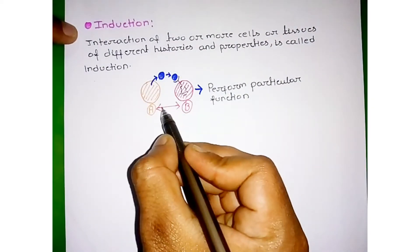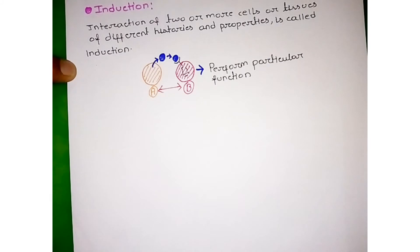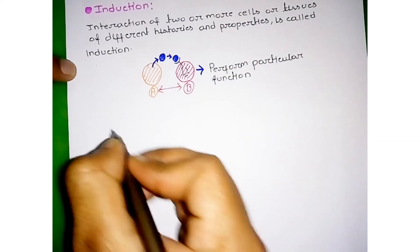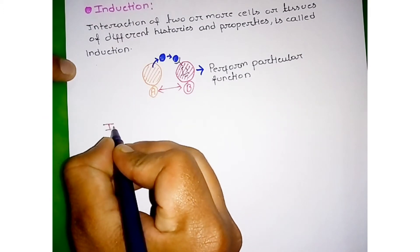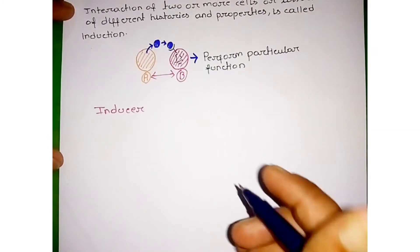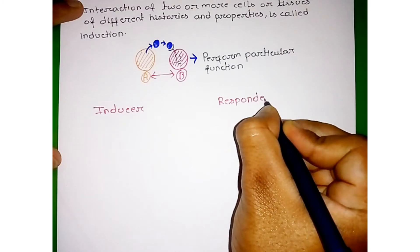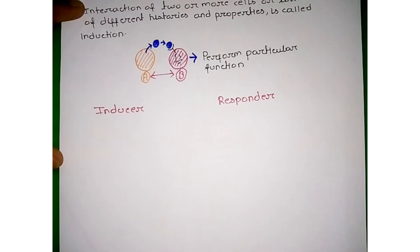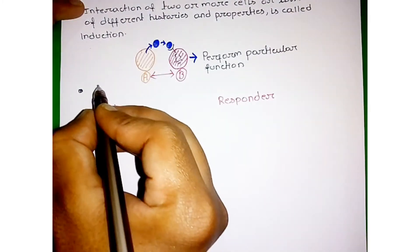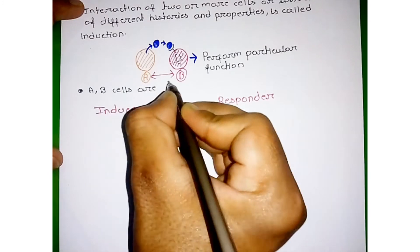This cell-cell interaction is called the induction process. In induction, there are two important terms we have to remember: the first is inducer and the second is responder. One important thing to remember is that these cells, A and B, are present in close proximity.